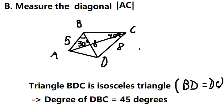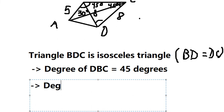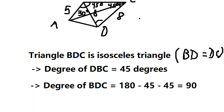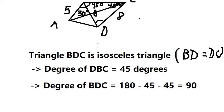Now we can find the degrees of BDC in this triangle. We use 180 degrees minus 45 minus 45, and we will have about 90 degrees. So that means BDC is a right triangle.